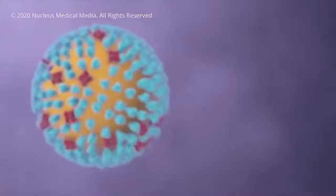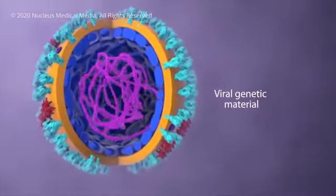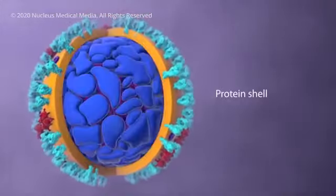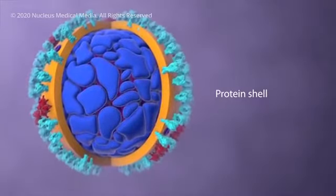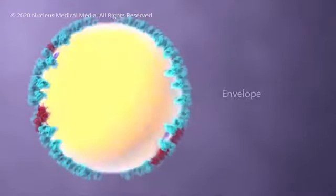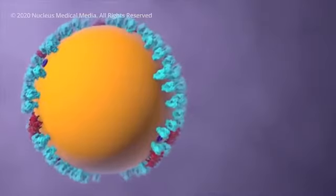Inside the virus, genetic material contains the information to make more copies of itself. A protein shell provides a hard protective enclosure for the genetic material as the virus travels between the people it infects. An outer envelope allows the virus to infect cells by merging with the cell's outer membrane.